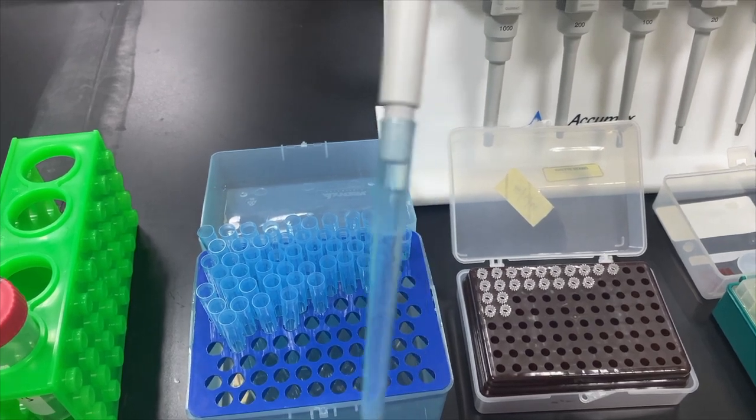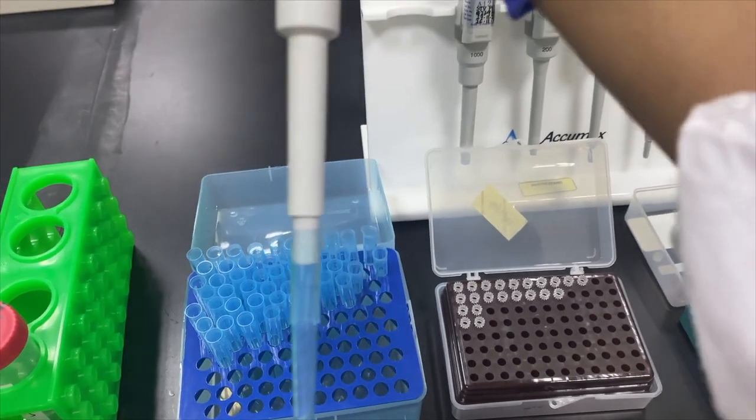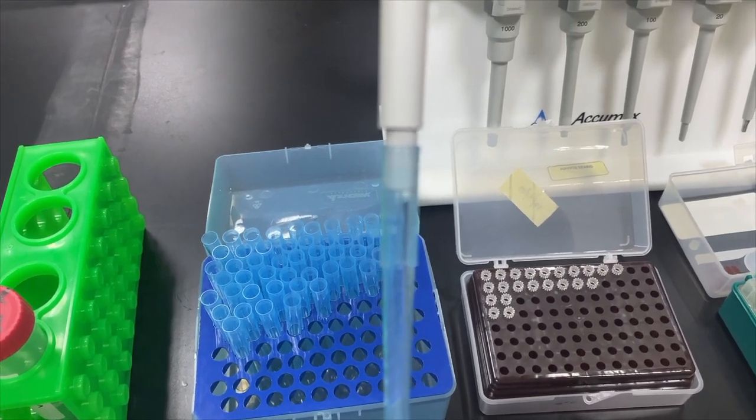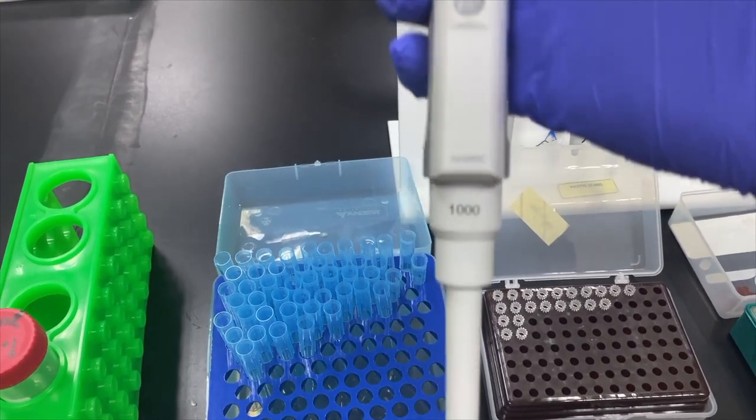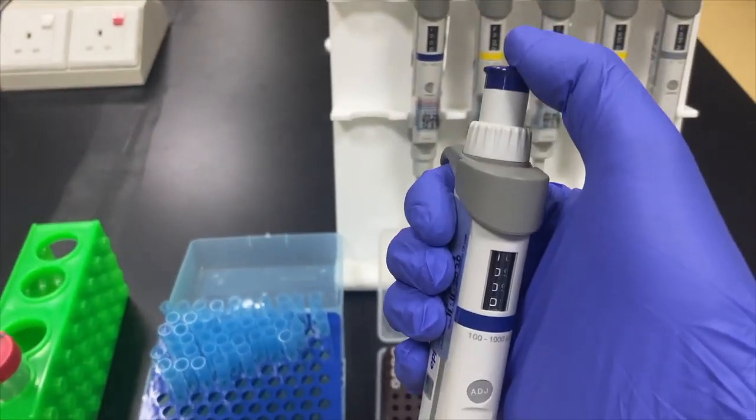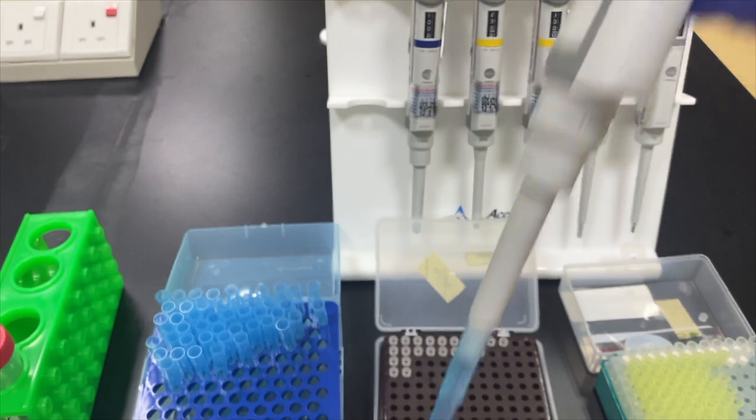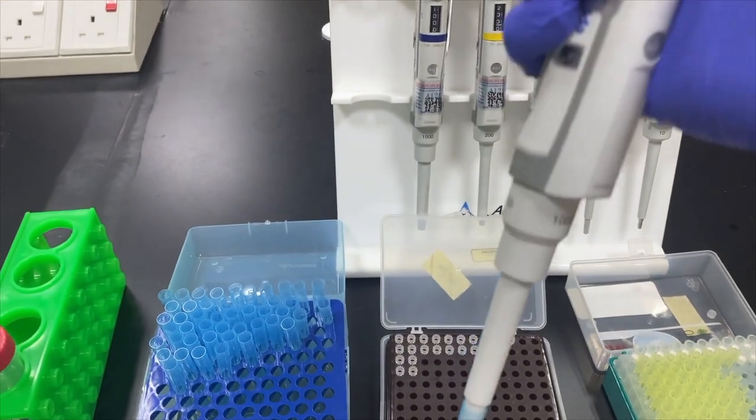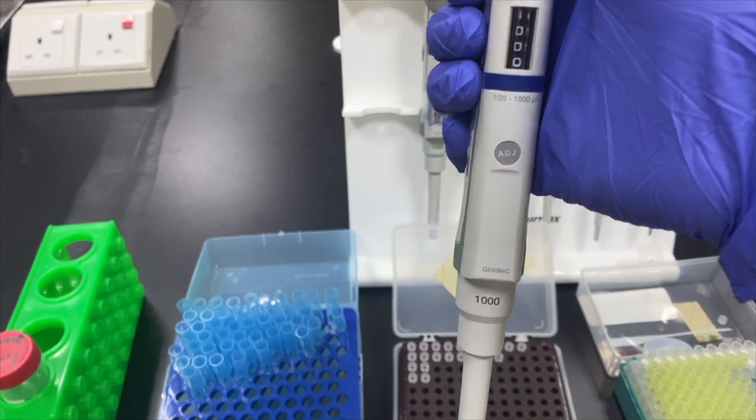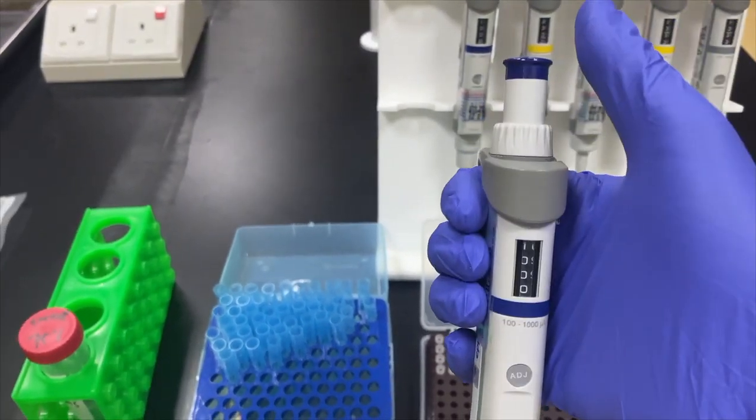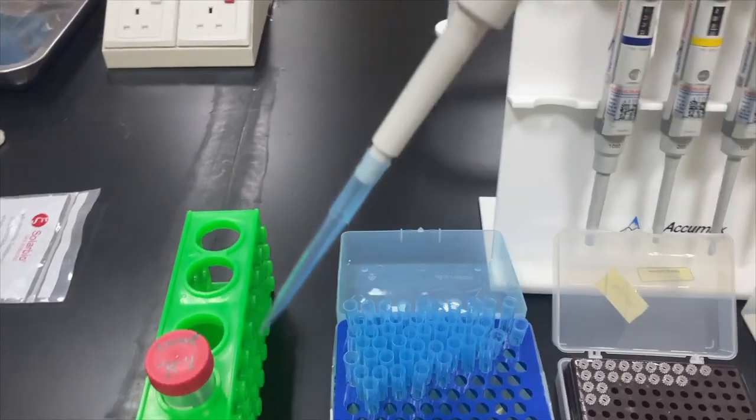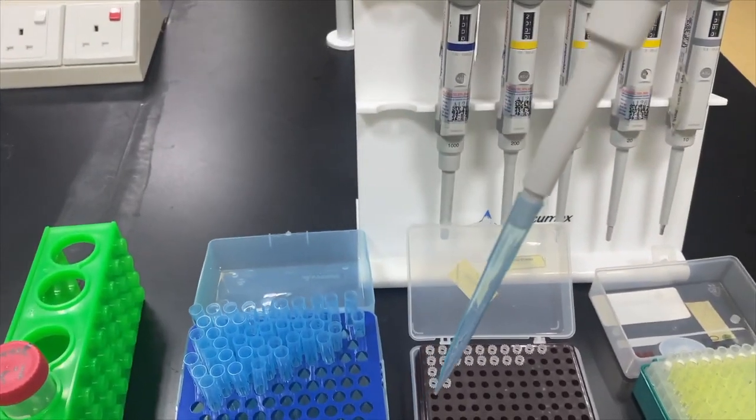So, this is the typical type of tips that attach to the micropipette. How to use it, you press first before putting the tips into the liquid that you want to take. Because if you didn't press it and then you put the tip into the liquid, it will create a bubble.